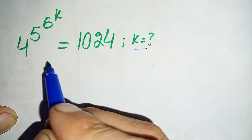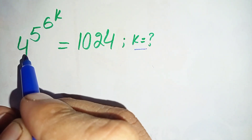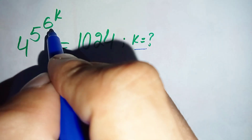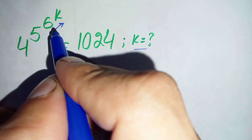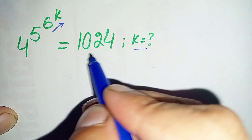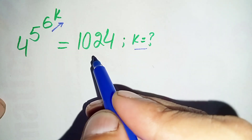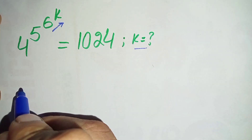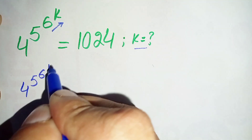Now, how can we solve this equation? If we want to simplify the left hand side, we cannot do so directly — specifically, we cannot simplify 6 raised to power k without using logarithms. So instead we will try to simplify the right hand side and try to make it a base-power form. We will rewrite the left hand side as: 4 raised to power 5, raised to power 6, raised to power k.